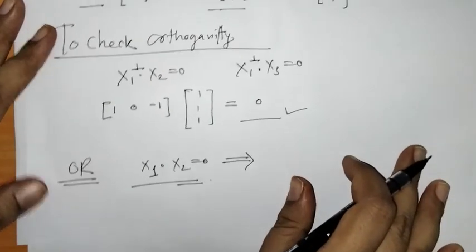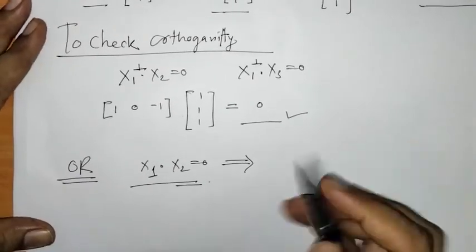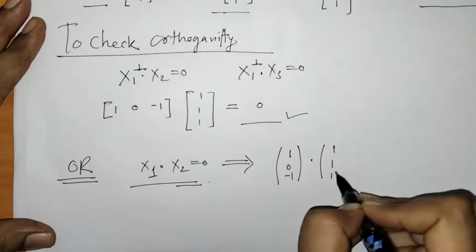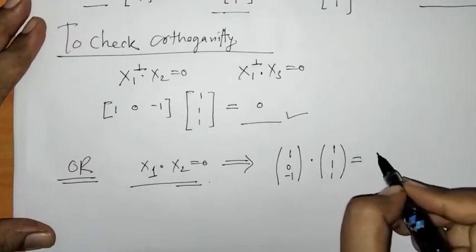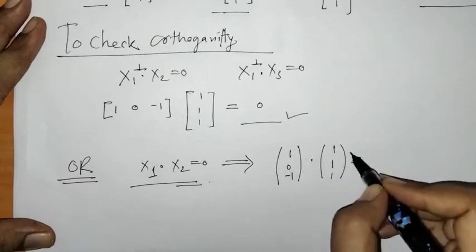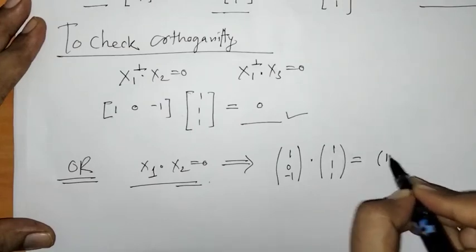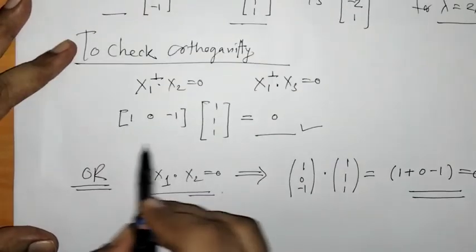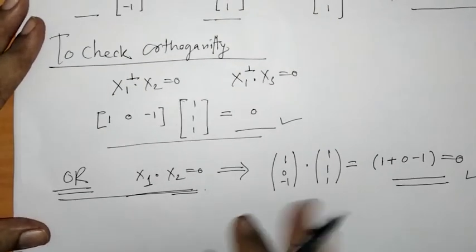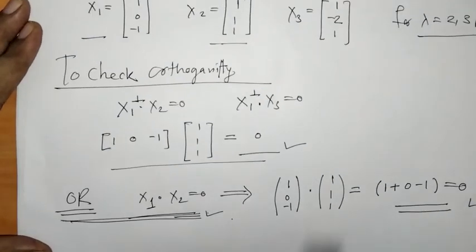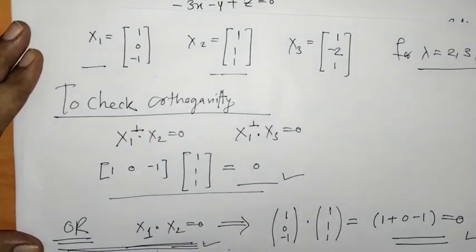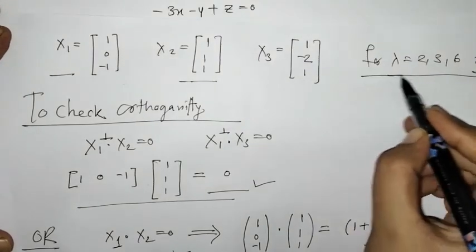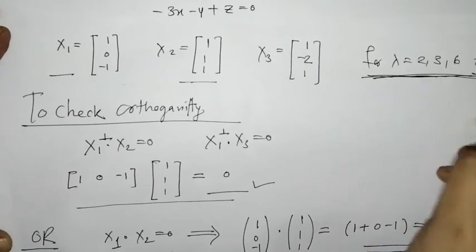The orthogonality condition is x1 dot x2 equals 0. Considering x1 equals (1, 0, minus 1) and x2 equals (1, 1, 1), their dot product is 1 plus 0 minus 1 equals 0. In this way we confirm that all three vectors are orthogonal.